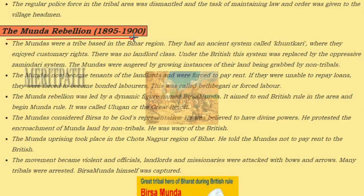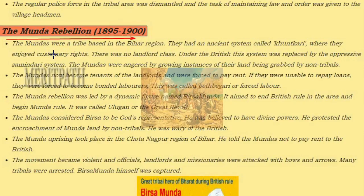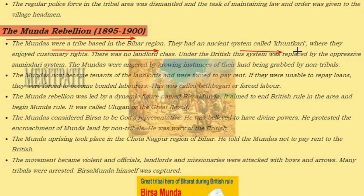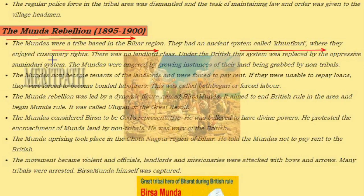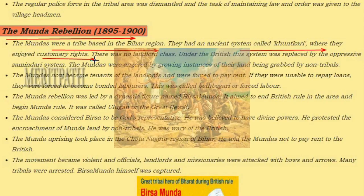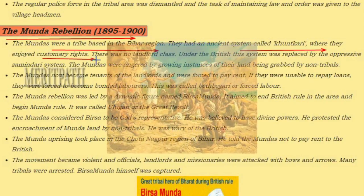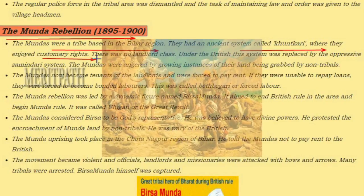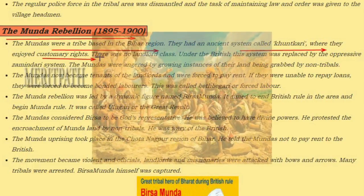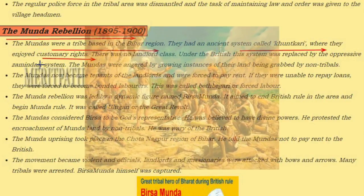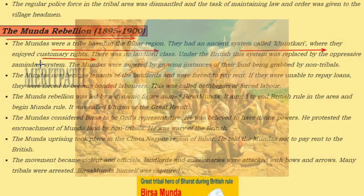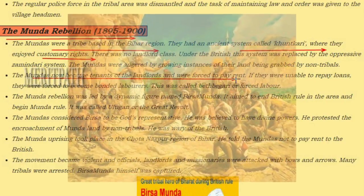The Munda Rebellion lasted for five years from 1895 to 1900. The Mundas were tribes based in the Bihar region. They had an ancient system called Khuntakari, where they enjoyed customary rights — there were no landlords and they enjoyed their freedom. But after the British system introduced a landlord structure, zamindars collected taxes from the tribes. The Mundas became tenants and were forced to pay loans for their lands.